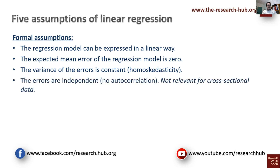The fourth assumption is that the errors are independent — meaning the errors are not correlated with each other. This is not really relevant for cross-sectional data, but when we have panel data or time series data it becomes relevant, because the error term of today can be associated with error terms of yesterday. This is known as autocorrelation, and we don't want autocorrelation in our sample because our estimates cannot be trusted.